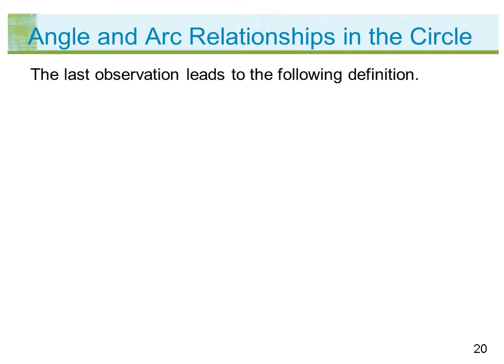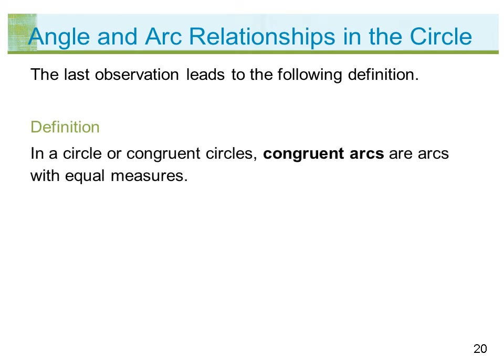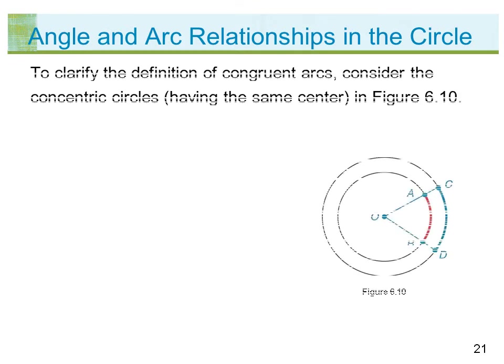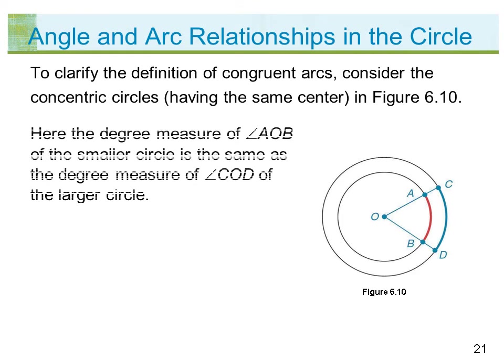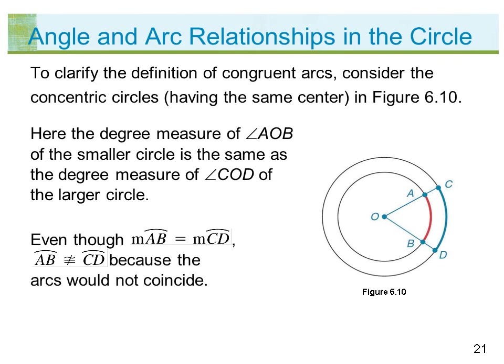The last observation leads to the following definition: in a circle or congruent circles, congruent arcs are arcs with equal measures. To clarify the definition of congruent arcs, consider the concentric circles in figure 6.10. Here, the degree measure of angle AOB of the smaller circle is the same as the degree measure of angle COD of the larger circle.